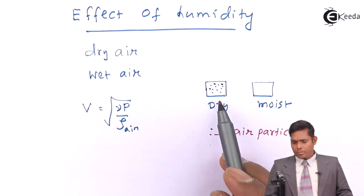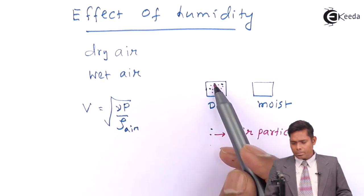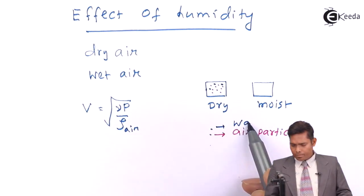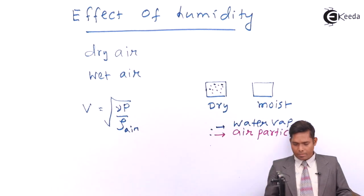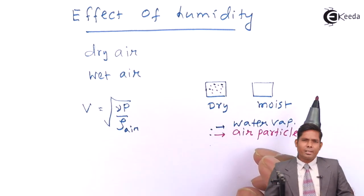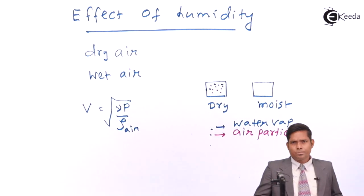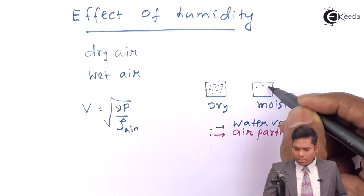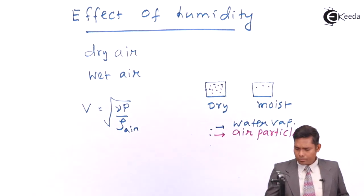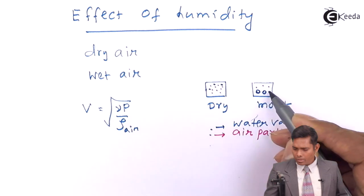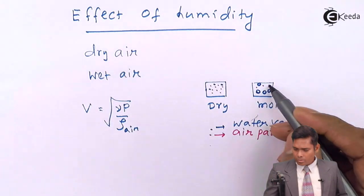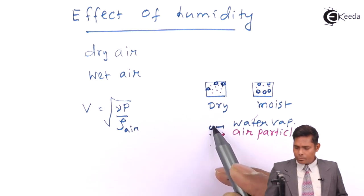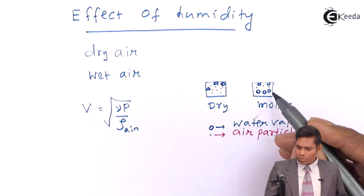So the pink particles are air particles and this blue colour is the water vapour. Now because it is dry, dry air contains more air molecules. In moist air, the air molecules will be less, but the water content will be more. Here the water content is less, and here the water content is more.